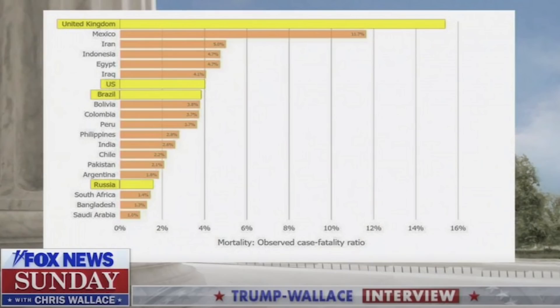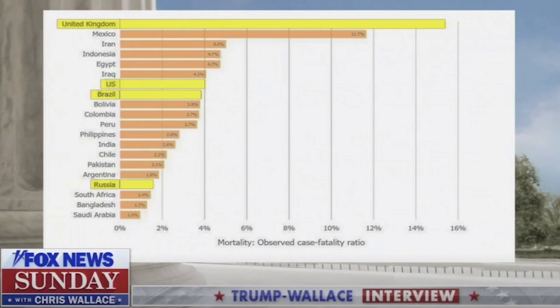Yesterday, Donald Trump in his interview with Chris Wallace said we have one of the lowest fatality rates in the world, and they put up a graph that the White House gave Fox News. In that graph, you have the U.K. at the top, the U.S. in the middle, and Russia closer to the bottom. But if you look at the top of the page, this is the case fatality rate — simply deaths divided by confirmed cases. The case fatality rate depends on the number of tests you do. If one person dies and a hundred people tested positive, that's a case fatality rate of one percent. You can lower your case fatality rate by doing more tests: if one person dies but you now have two hundred positive tests, your case fatality rate is only 0.5%. Nothing has changed about the portion of the population that has died — you've just tested more people and lowered your case fatality rate.